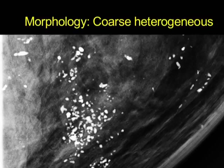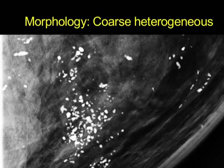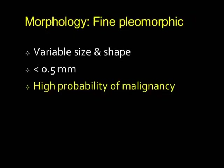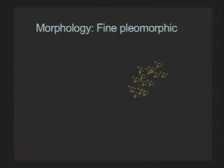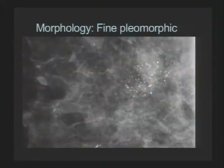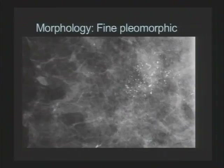Another example shows coarse heterogeneous calcifications in a segmental distribution — these actually turned out to be high-grade DCIS. Fine pleomorphic calcifications are also variable in size and shape, but small — less than 0.5 millimeters — and have a high probability of malignancy. It doesn't matter what distribution; you're going to biopsy these. They look a lot like coarse heterogeneous except they're small — lots of shapes, triangles, parallelograms, many edges. Highly suspicious, always biopsy.